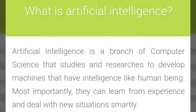What is artificial intelligence? Artificial intelligence is a branch of computer science that studies and researches to develop machines that have intelligence like human beings. Most importantly, they can learn from experience and deal with new situations smartly.